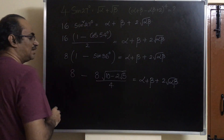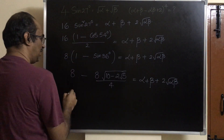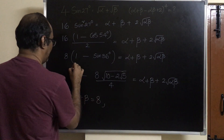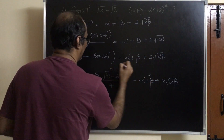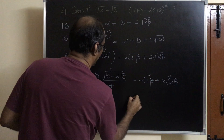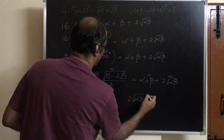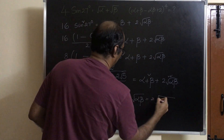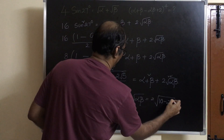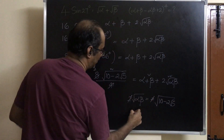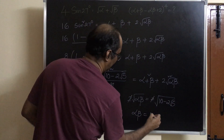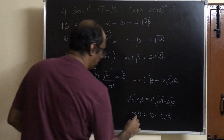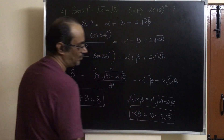Now let us equate the rational part and irrational part. We have alpha plus beta equals 8 from the rational part. For the irrational part, we can write 2 root alpha beta equals 8 by 4 times 2, that is 2 into square root of 10 minus 2 root 5. The 2s cancel, and squaring gives alpha beta equals 10 minus 2 root 5.